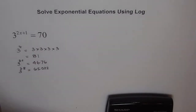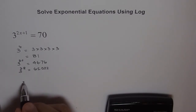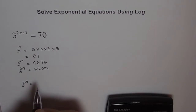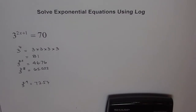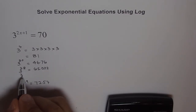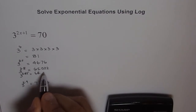That is even less, but we are coming closer to 70. So let's try 3.9 this time. 3 to the power of 3.9 equals 72.57 — we have gone higher. So we are somewhere in between 3.8 and 3.9. Let's try 3 to the power of 3.85, and we get 68.69.